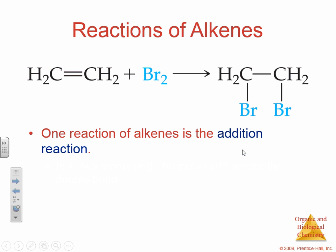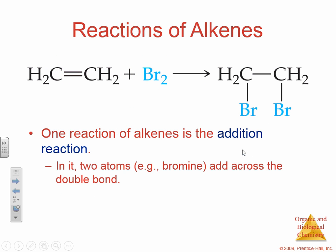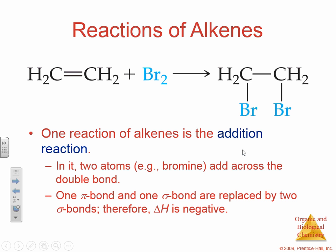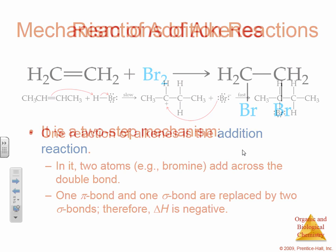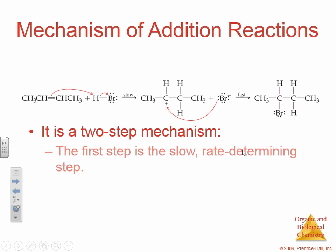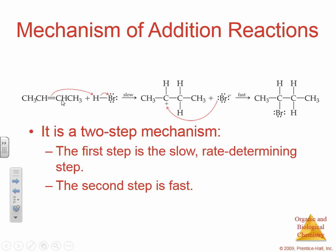Alkenes, because of that double bond, like to react. Usually the reaction of alkenes is an addition reaction or a synthesis reaction — they're going to be adding two atoms, breaking up that double bond. Typically that pi bond is going to be replaced by a sigma bond. We have a two-step mechanism: the first step being slow, the second being fast. The first step is losing that double bond and gaining one H or getting a bond; the second is when you gain that Br.